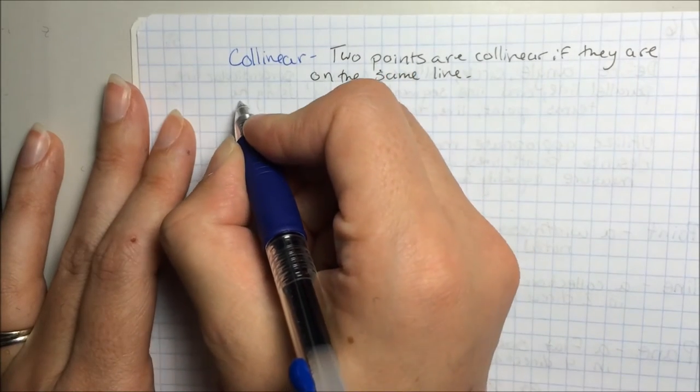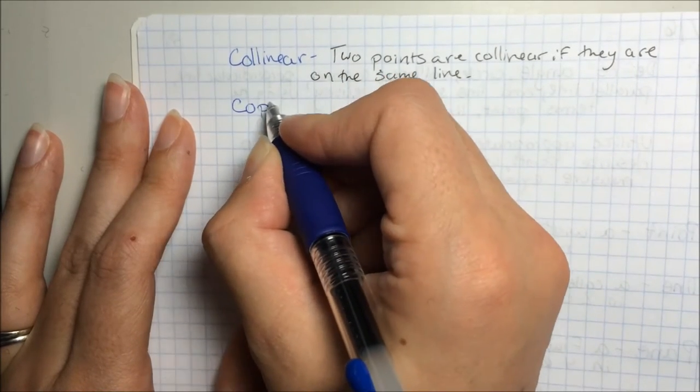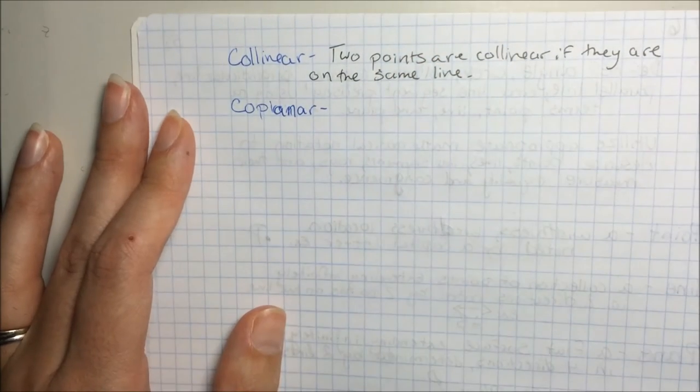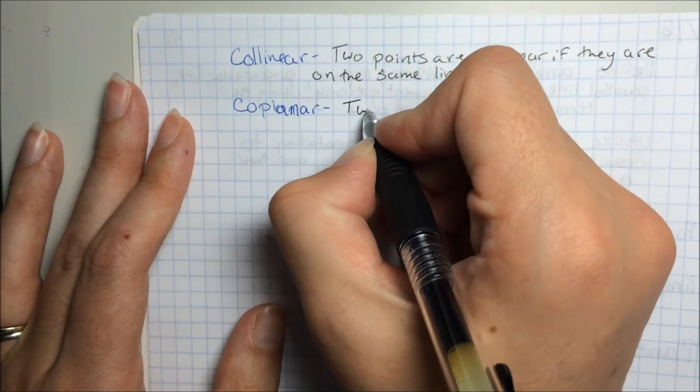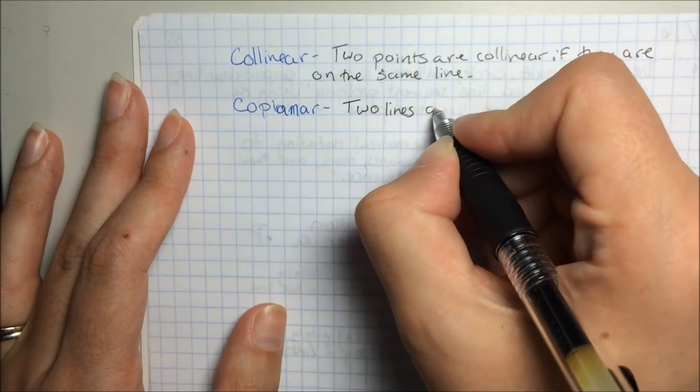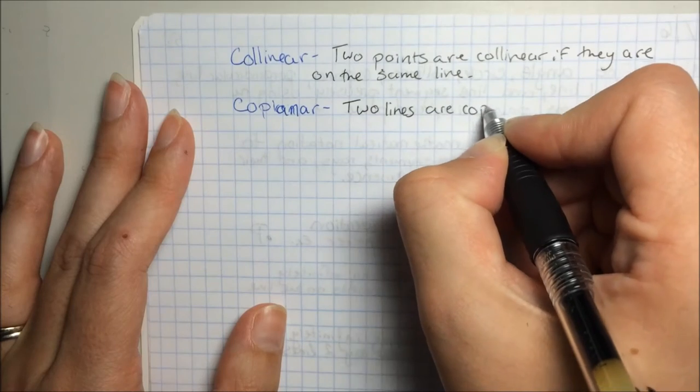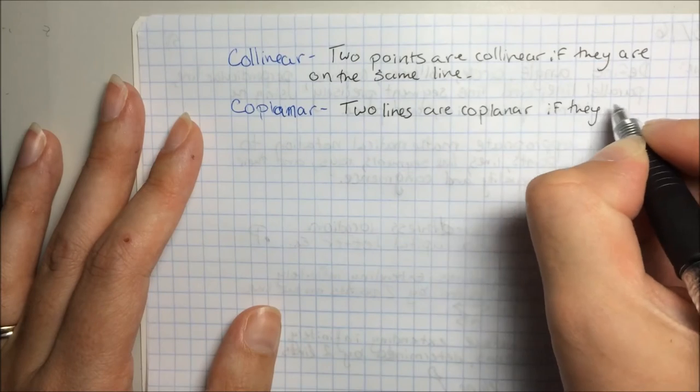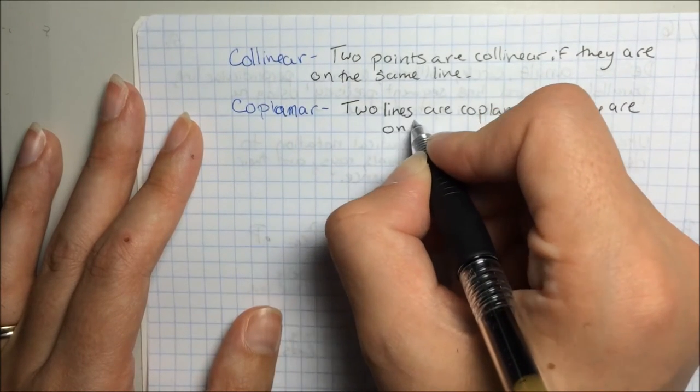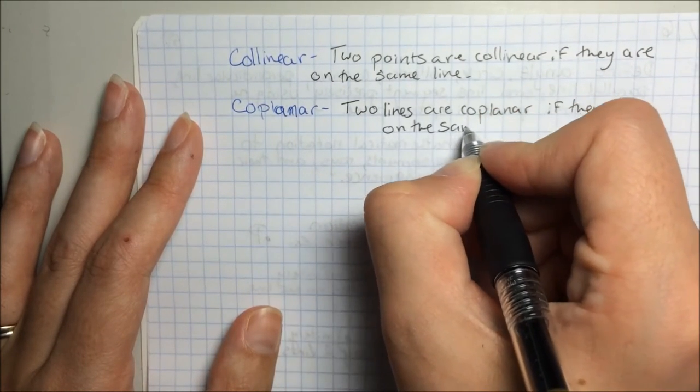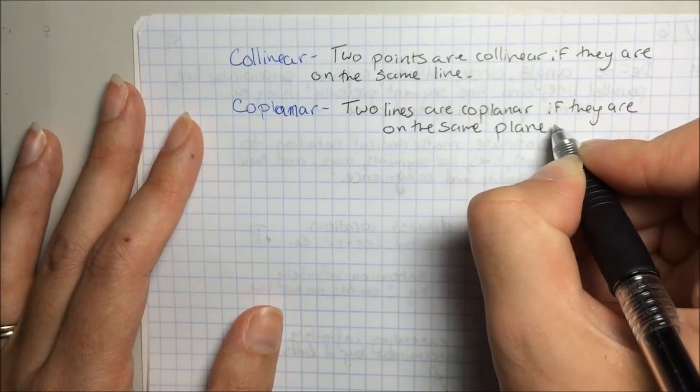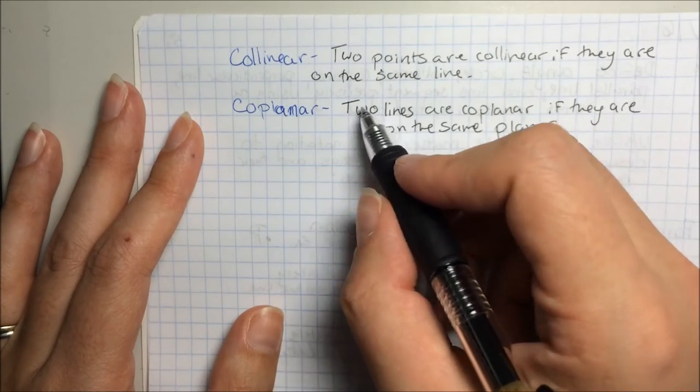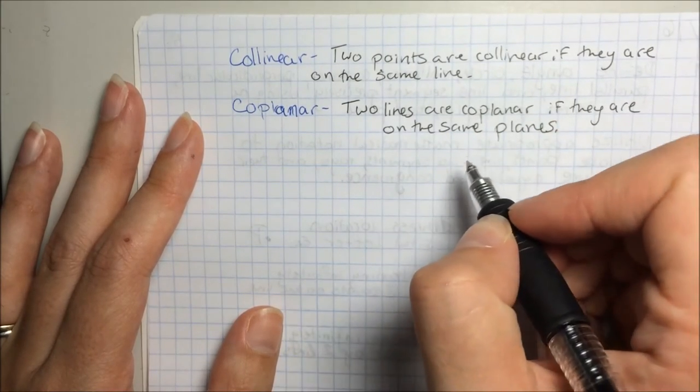Coplanar. Two lines are coplanar if they are on the same plane. Points can be coplanar as well, so we can substitute this word lines with points, so two points are coplanar if they are on the same plane.